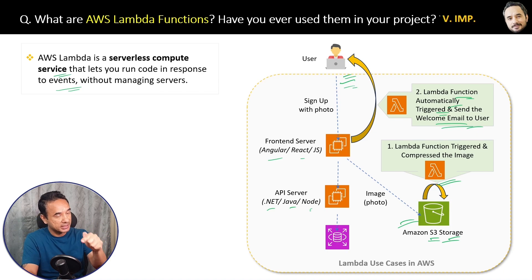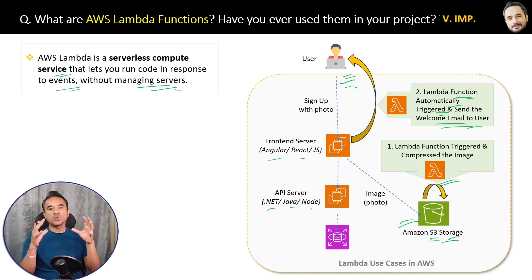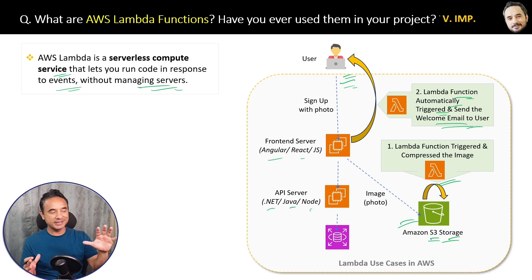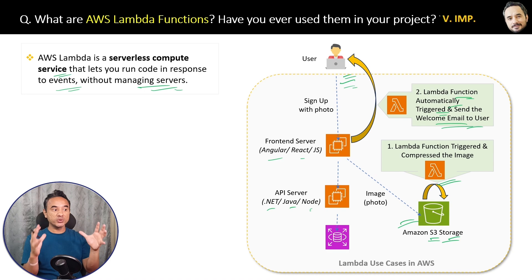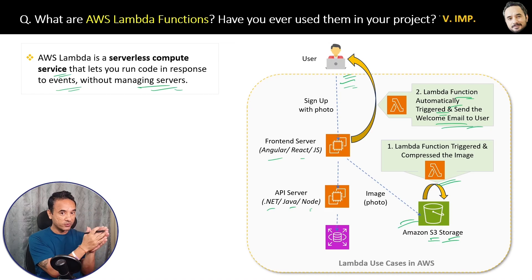Some event must happen to trigger the Lambda function, and it runs without you managing any servers. In short, Lambda will only execute when something happens — it is just a piece of code. This diagram and definition in the book will help you in quick revision for your interviews.